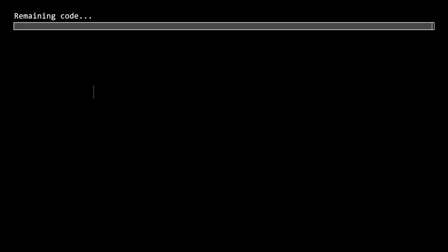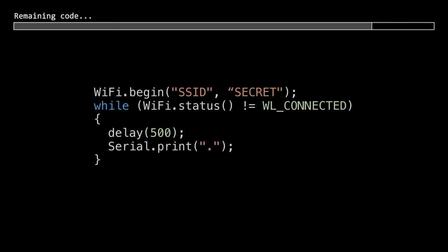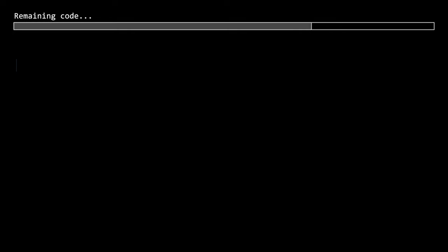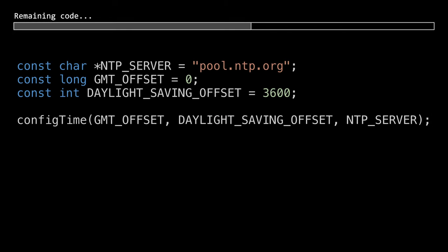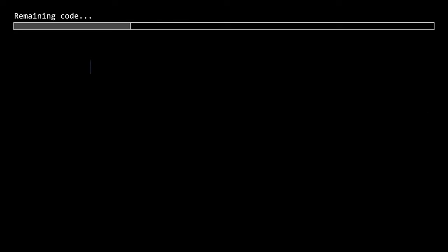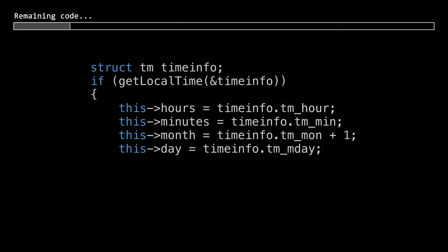We connect to the WiFi network using the standard code and then configure our time source with the NTP server along with offsets for our time zone and daylight savings time. We can then get the current time and pull out the hours and minutes and the date.